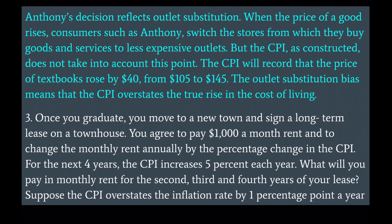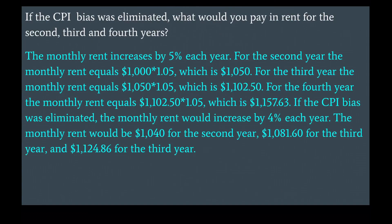Third, once you graduate, you move to a new town and sign a long-term lease on a townhouse, agreeing to pay $1,000 a month rent and to change your monthly rent annually by the percentage change in the CPI. For the next four years, the CPI increases 5% each year. What will you pay in monthly rent for the second, third, and fourth year of your lease? Suppose the CPI overstates the inflation rate by one percentage point a year. If the CPI bias was eliminated, what would you pay in rent for the second, third, and fourth years?